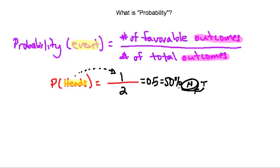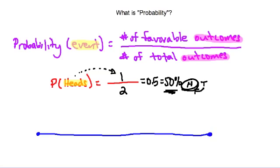This brings up how we interpret probability values. The best way to think about this is on a number line. Probability ranges, in decimal values, from 0 all the way to 1. In terms of percentages, they range from 0% all the way up to 100%.